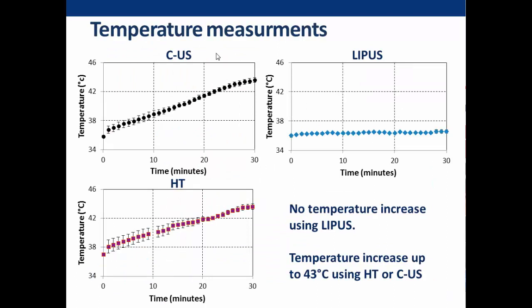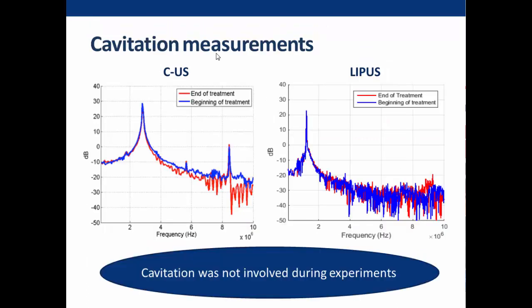These are the temperature measurement results. Temperature increased up to 43°C when continuous low intensity ultrasound was used, and a similar increase was obtained using a warm bath. No temperature increase was observed when low intensity ultrasound was delivered in pulsed mode. Importantly, no signs of cavitation were observed with either continuous or pulsed low intensity ultrasound — no harmonics or broadband emission. The maximal peak negative pressure was 0.3 MPa at 3 MHz.